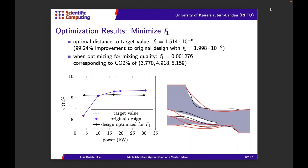Here are the results. Looking first at the individual minima: minimizing F1, the distance to target, we get nice results — the CO2 percentage over power levels aligns nicely with the target value. On the right-hand side is the corresponding design: the bluish surface is the original design, the black line is the new optimized design, which differs especially in the shape of the gas inlet and also a bit in the air inlet. The red design is optimized for mixing quality, and it is completely different, especially in the gas inlet shape. When measuring distance to the target value for the mixing-quality-optimized design, it is far off — it wouldn't even appear in the plot.